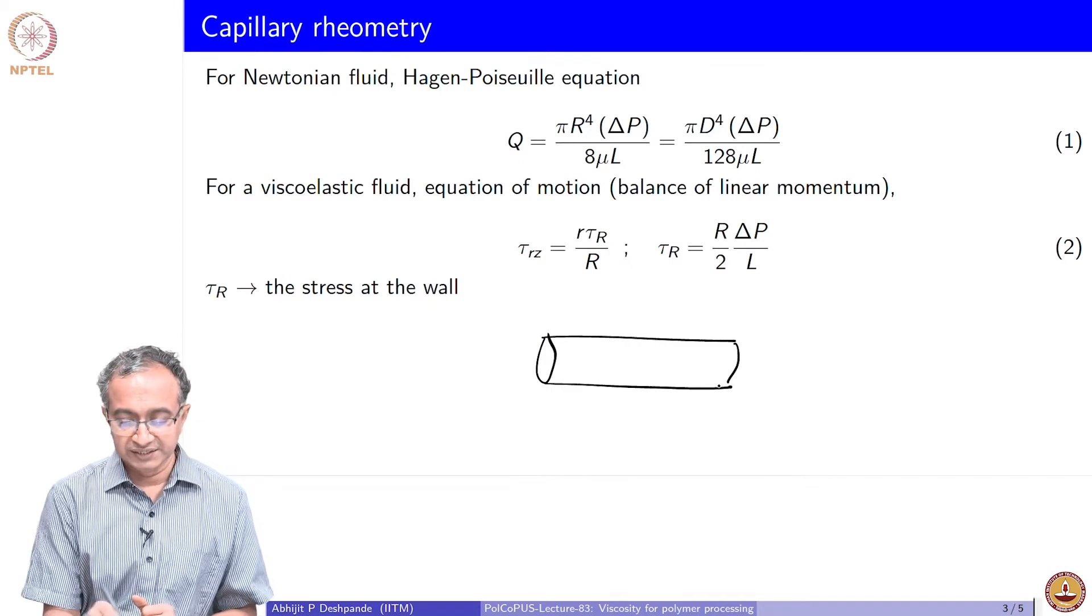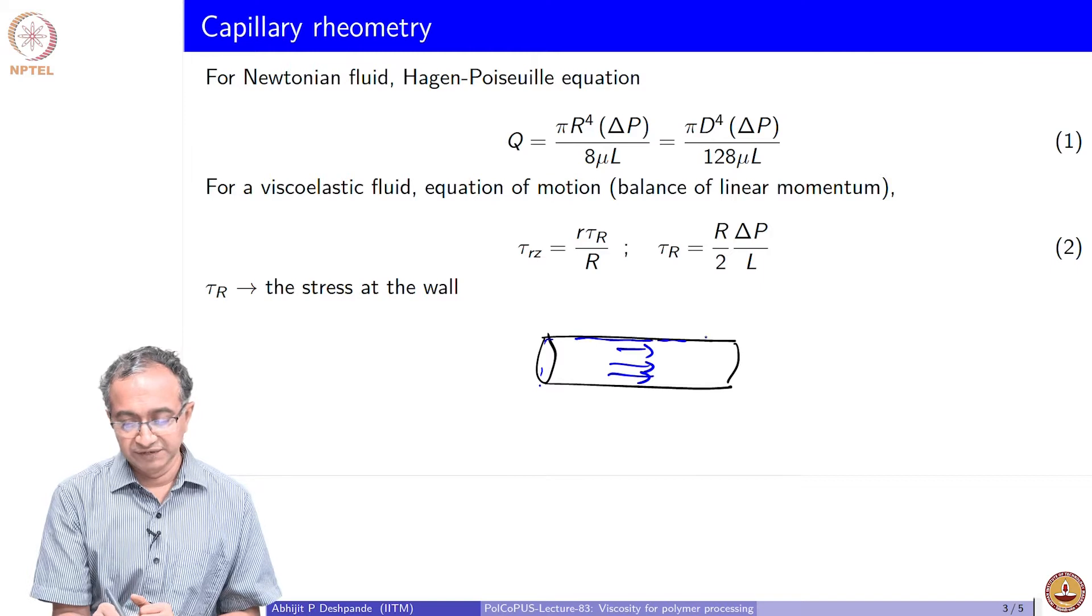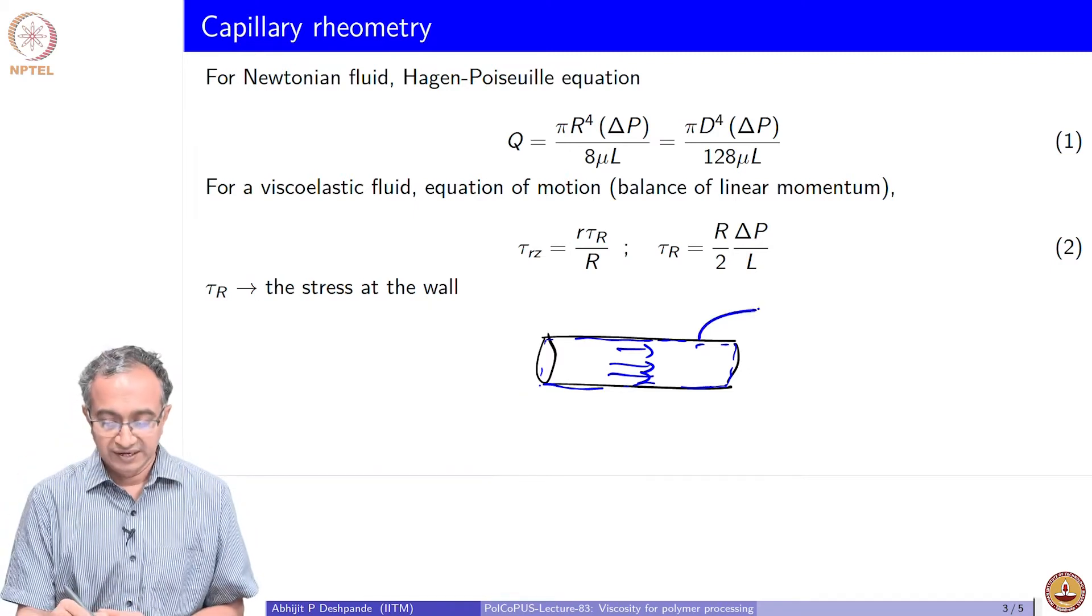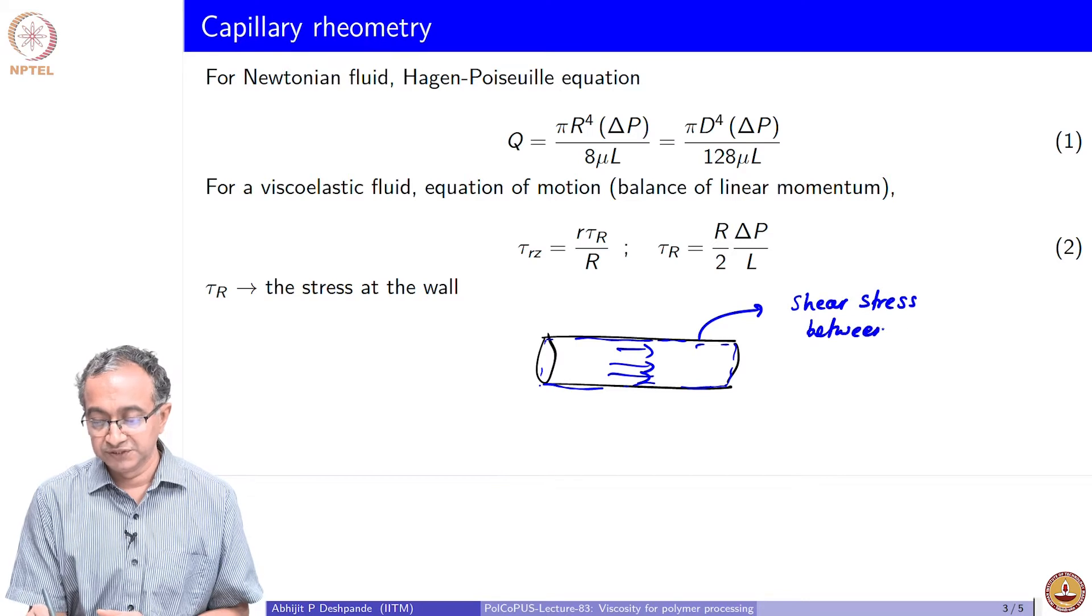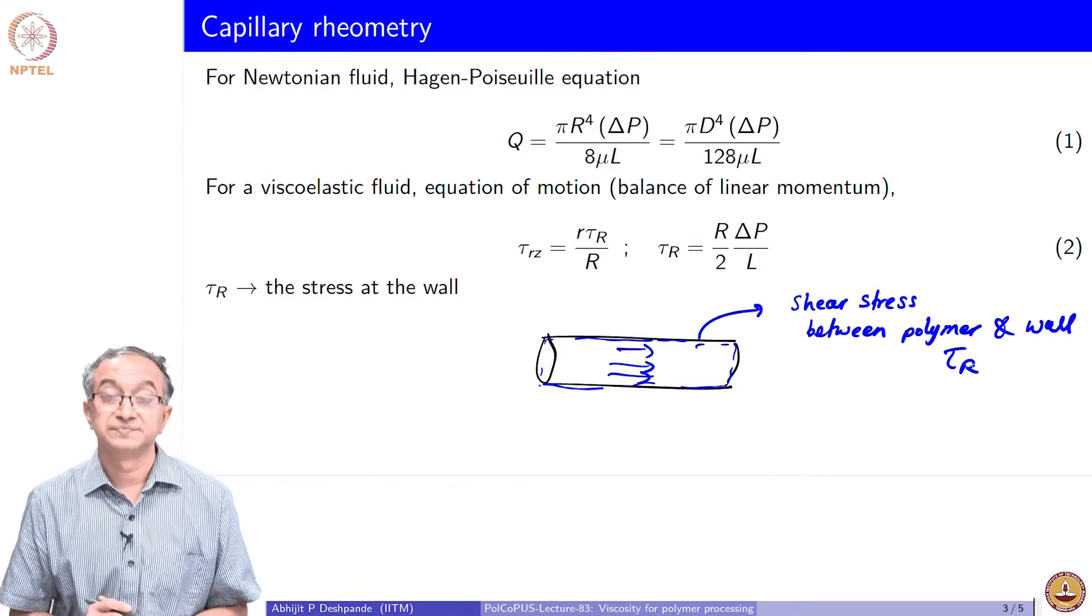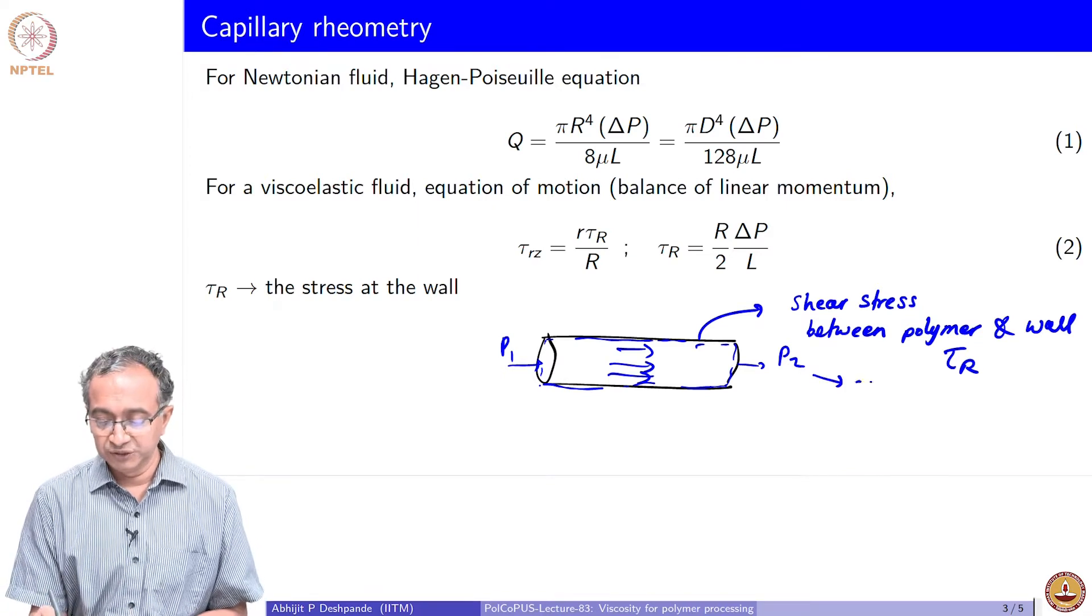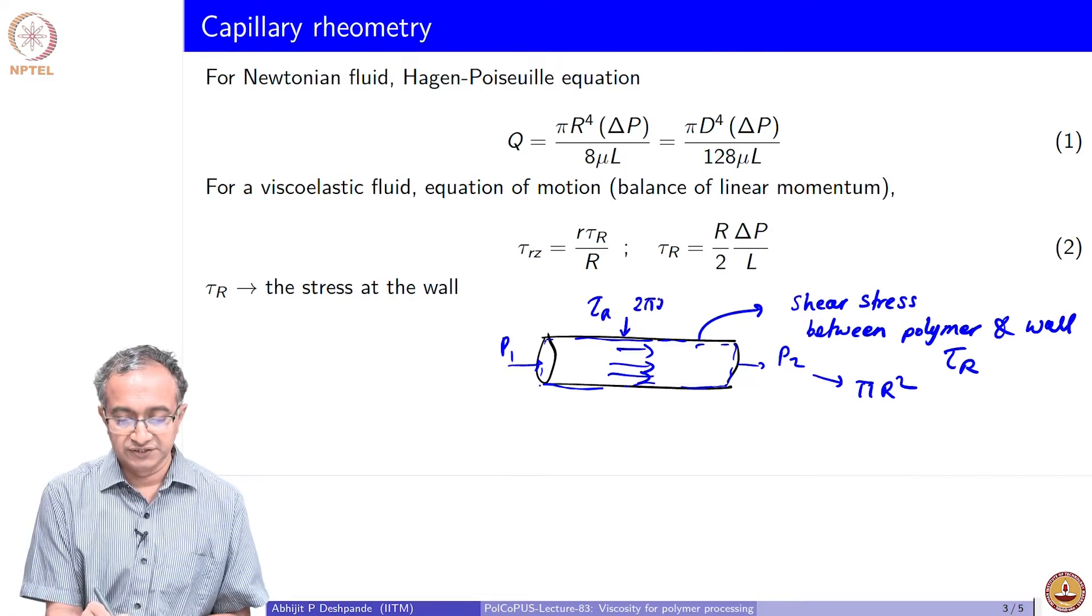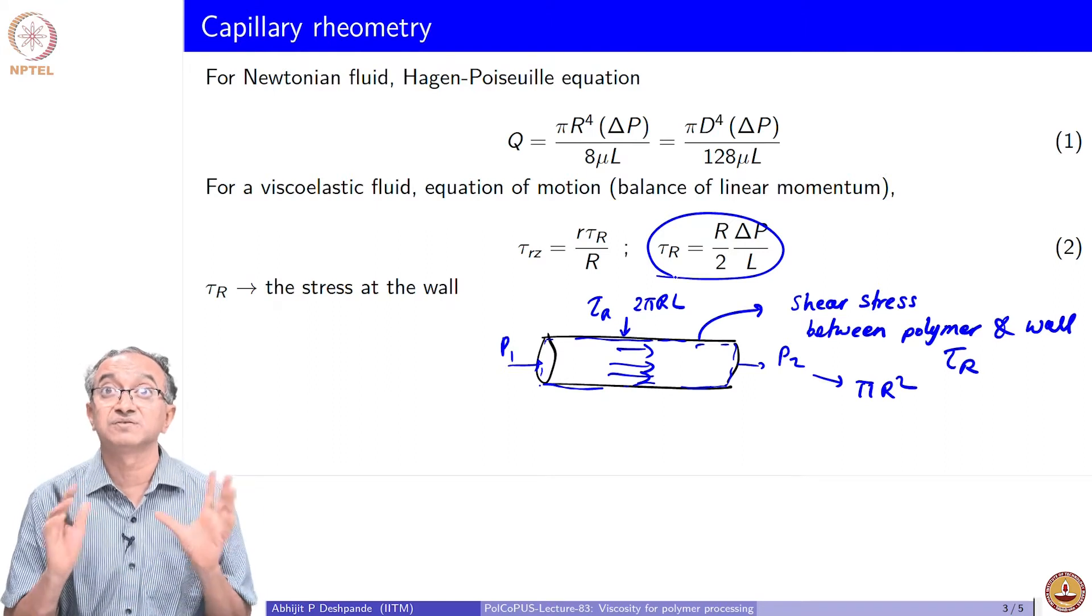Knowing overall force balance we can actually still continue to use capillary rheometry for a general fluid by focusing on the wall of the material. If you look at this capillary and do a force balance given that we have this polymer flowing, we can do a force balance by looking at a control volume which is the cylinder itself. At the wall we have shear stress between polymer which is being forced to move and the wall. This we will call tau r and in the entry and exit we have P1 and P2 pressure.